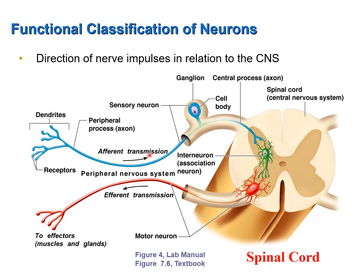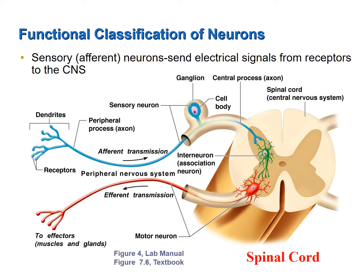Is it sending nerve impulses toward the central nervous system, away from the central nervous system, or within the central nervous system? Sensory neurons detect stimuli in the peripheral nervous system, so they have receptors that detect stimuli, and then send nerve impulses from those receptors toward the central nervous system as sensory input. So these are sensory neurons.